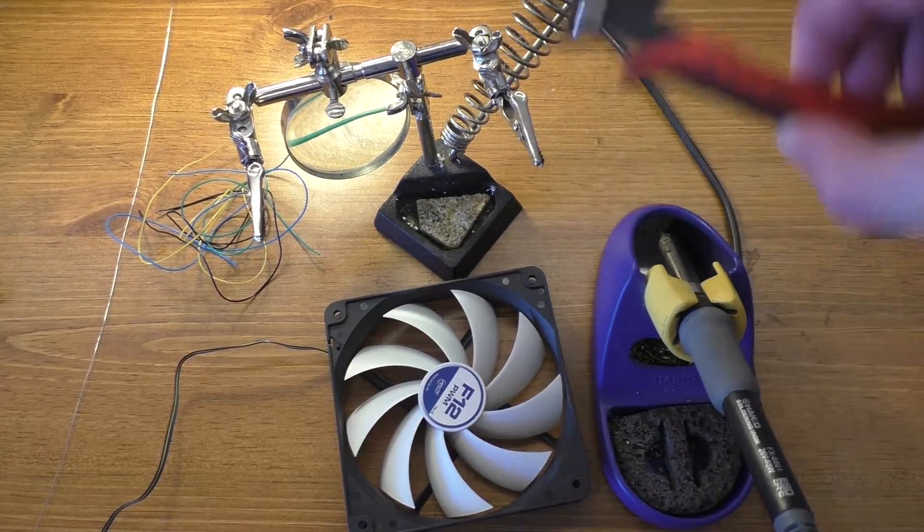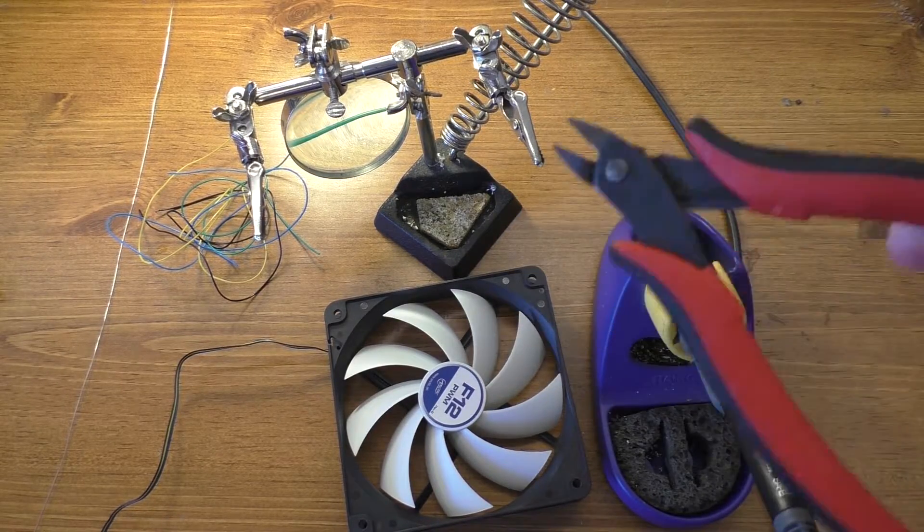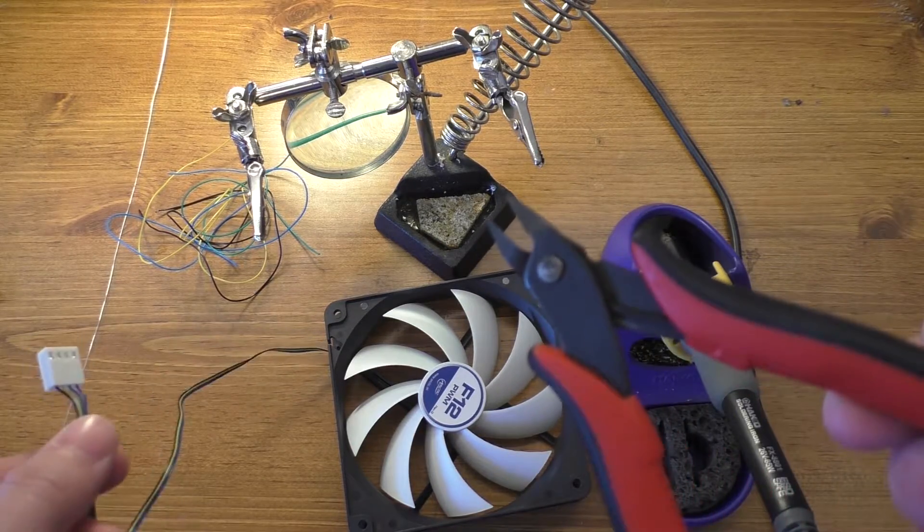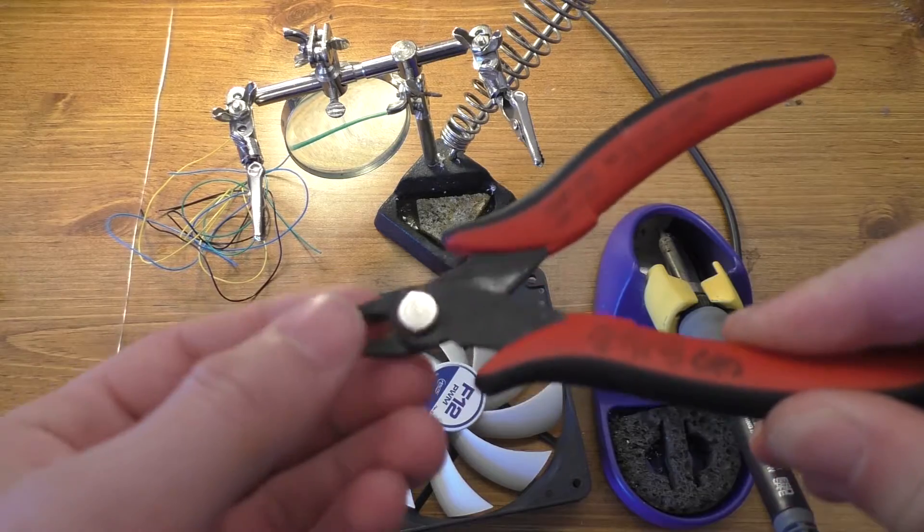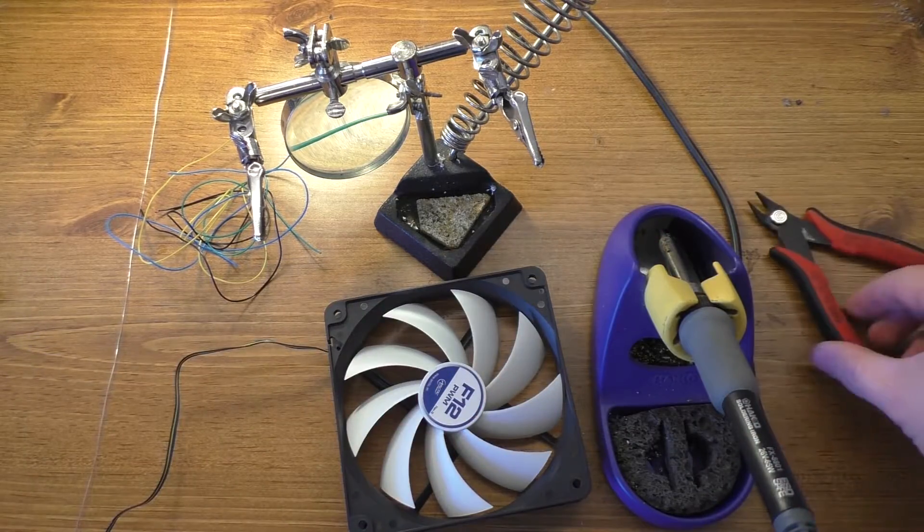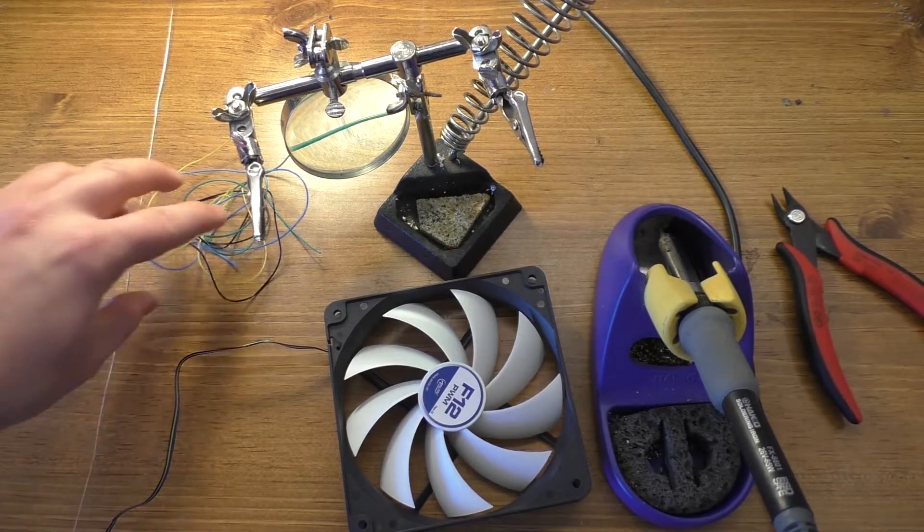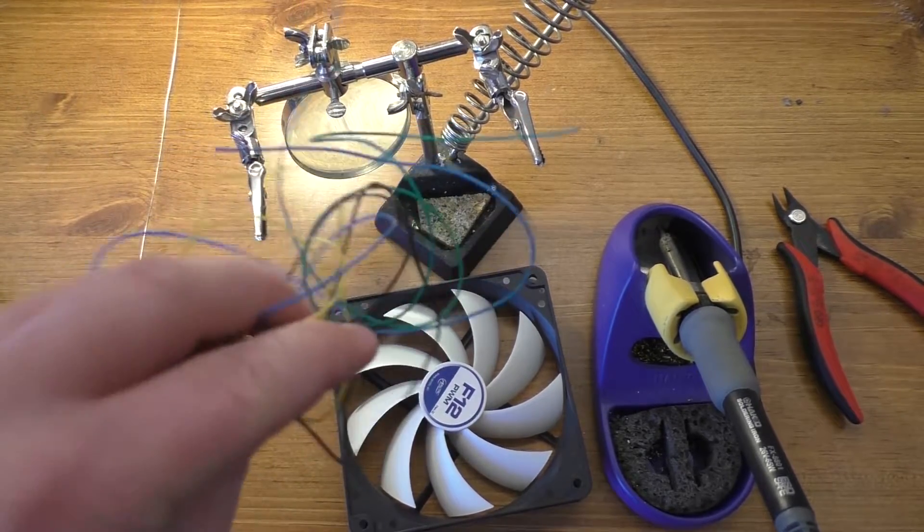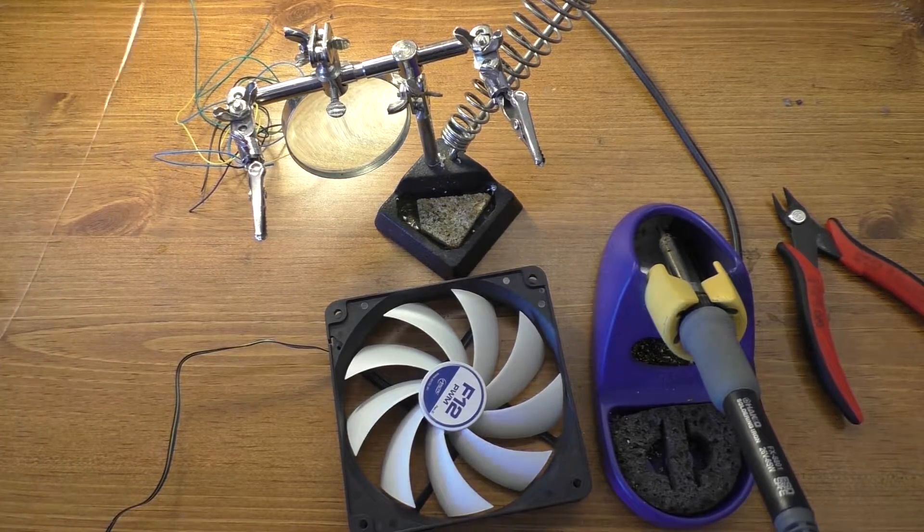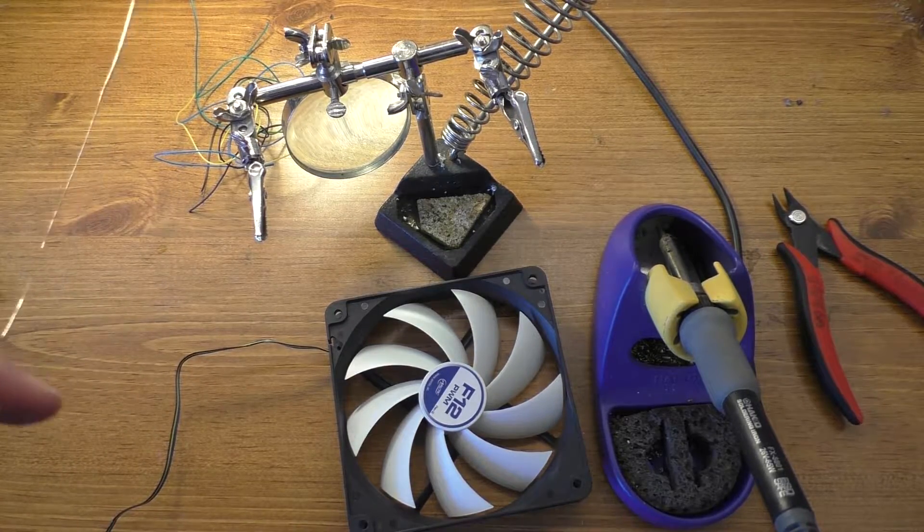You'll need something to cut the wire with. You'll also need something to strip the wire with. And usually I prefer, especially on these really thin wires that I'm working with today, I just like to strip the wire with the side cutters. Obviously, we're going to need the extended wire. We'll also need some heat shrink tubing and something to shrink it with.